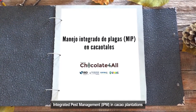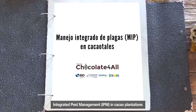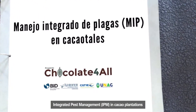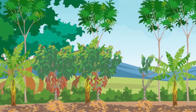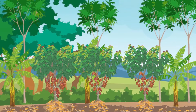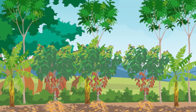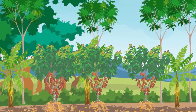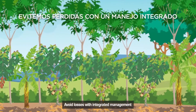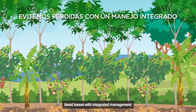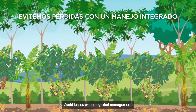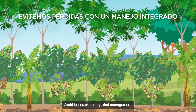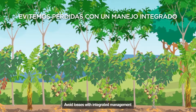Integrated pest management (IPM) in cacao plantations. A healthy and productive cacao plantation is the source of income for cacao families. Unfortunately, we have insects, fungi, and other pests that damage the crop and can cause up to 80% production losses.